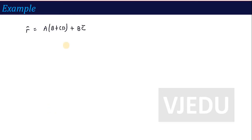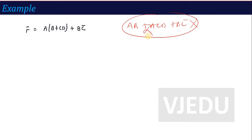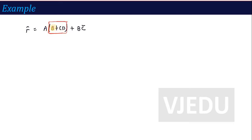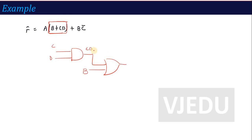Let's see another example. If a function is given, such as A(B + CD) + BC̄, the first step is not to expand the multiplication. For the term B + CD: CD requires an AND gate with inputs C and D. Then I add B using an OR gate — one input is CD, another is B — generating B + CD.